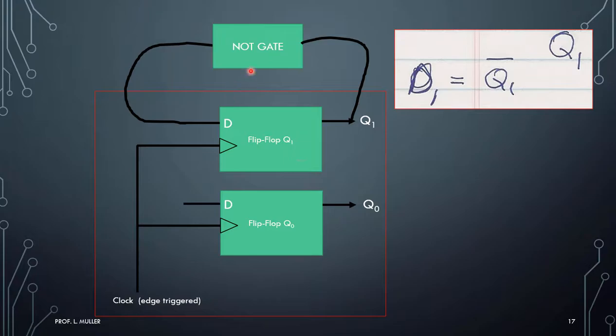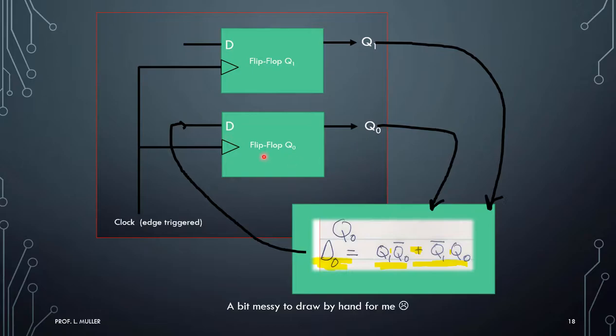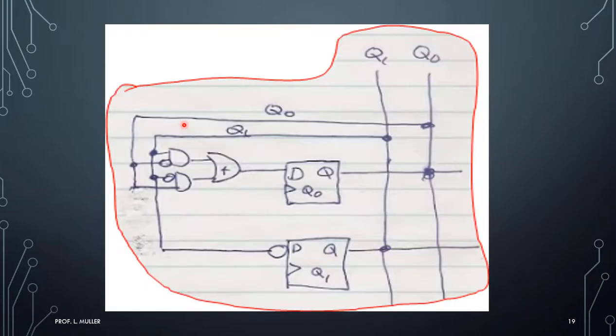So here we have it. For flip-flop Q1, our equation was D1 is simply equal to Q1 not. So I take the current time, put it into a not gate, and bring it in here. And it will follow this logic for the future. Next, Q0 says you need to look at Q1 and Q0, or them together in this combination, and send that into D0.